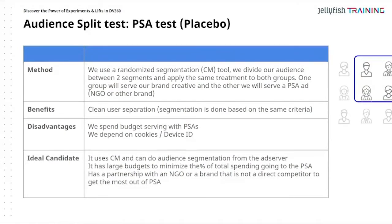In this methodology we use a randomized segmentation. Using the ad server — in this case Campaign Manager if we have the Google Marketing Platform — we divide our audience between two segments and apply the same treatment to both groups. One group will serve our brand creative and the other will serve the public service announcement ad, which could be a charity ad from an NGO or a different brand. The benefit is a clean separation in segmentation.